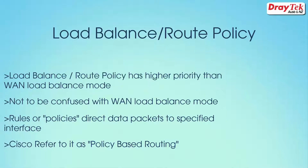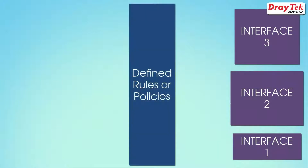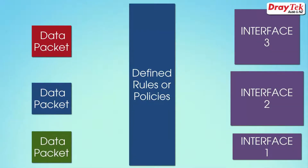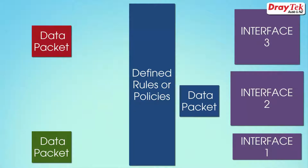Load balance route policy is also referred to as policy based routing in Cisco devices. It is a feature where a set of rules or policies are defined first. Then if a data packet arrives that matches any of the configured policies it will be directed to the specified interface.